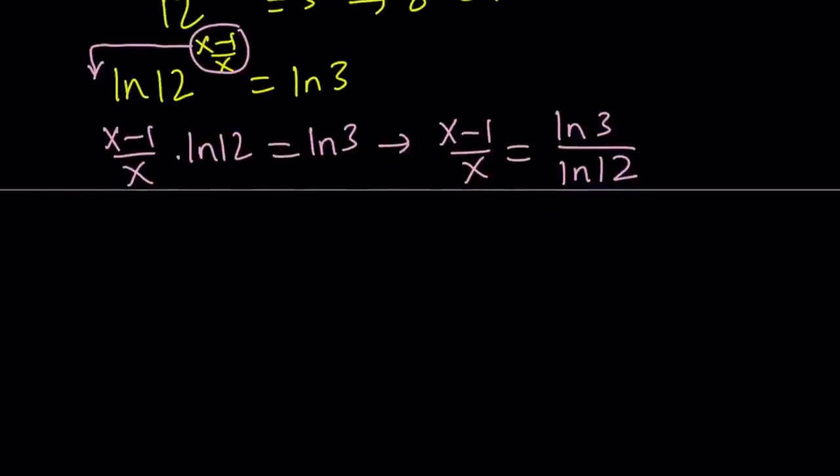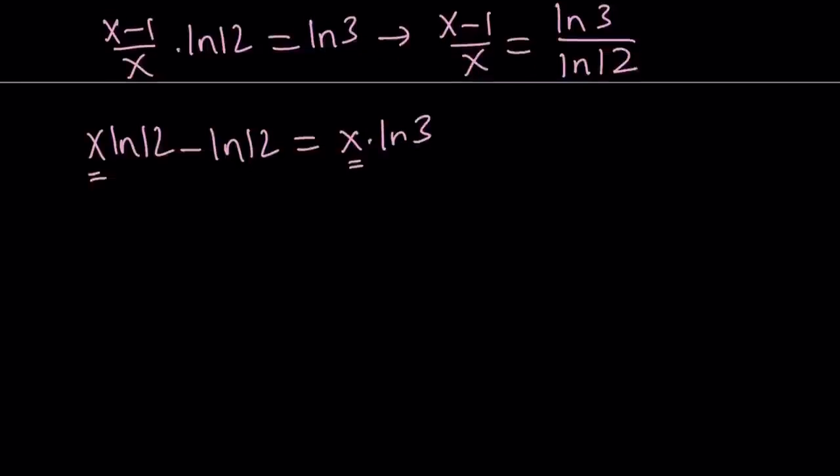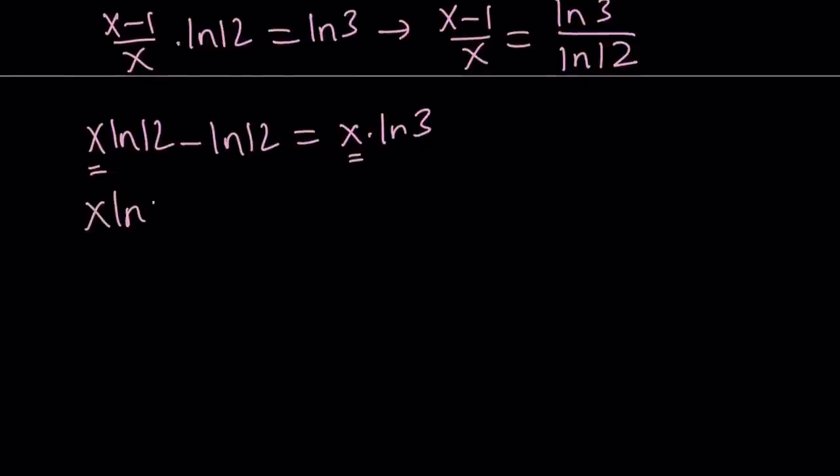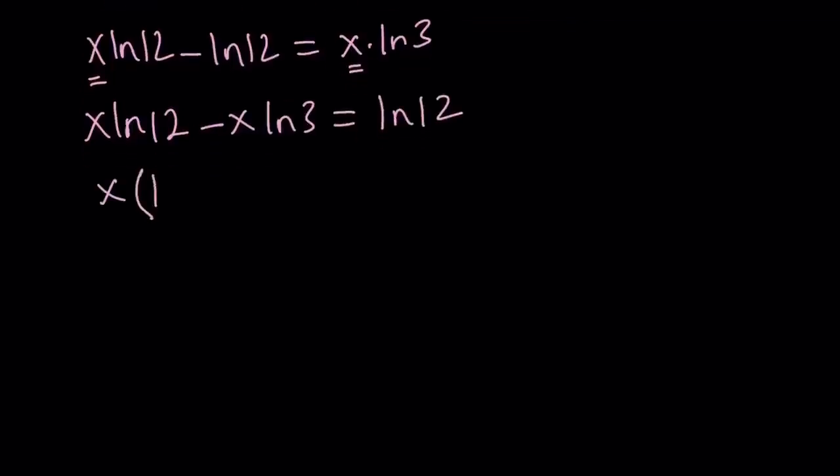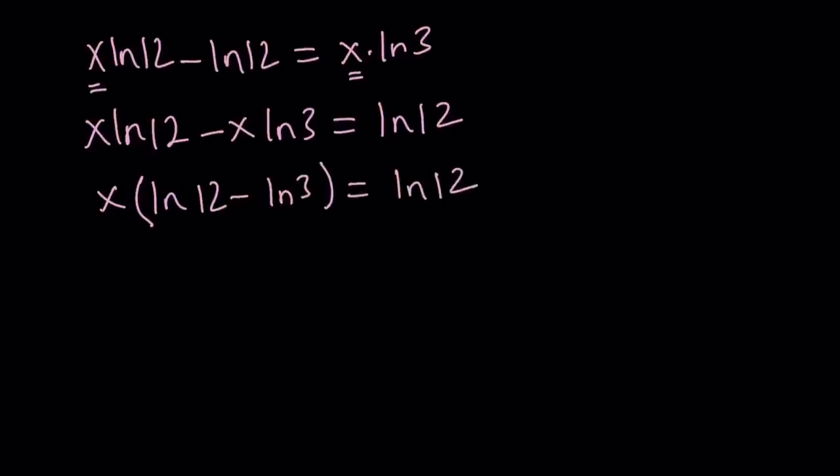So we get the following. And then from here we can go ahead and do cross multiplication. If you multiply x minus 1 by ln 12, you get x ln 12 minus ln 12. That equals x times ln 3. Now since these terms both have x in them, let's put them on the same side because we're going to factor x ln 12 minus x ln 3 and put the ln 12 on the right hand side. We can factor out x and write it this way.